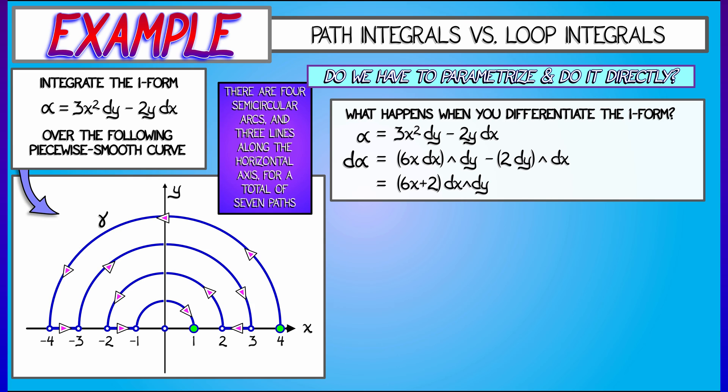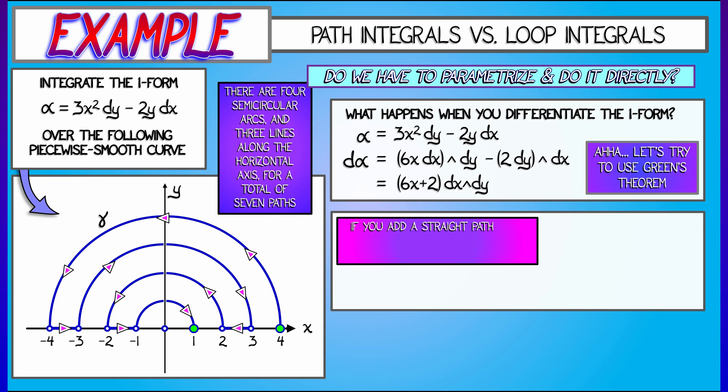Now, unfortunately, this path is not the boundary of some enclosed region. It's an open path, and I can't apply the independence of path theorem. But I can use Green's Theorem by closing up this path. What I'm going to do is add a straight line segment from the end point of 1 to the start point of 4, moving along the x-axis, going to the right.